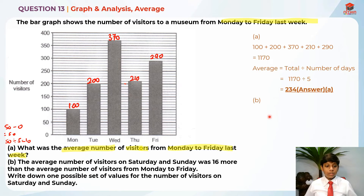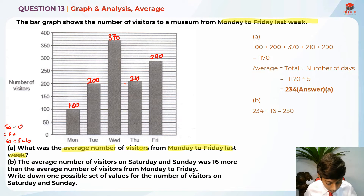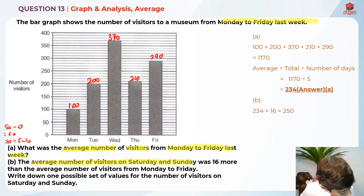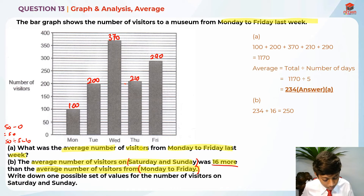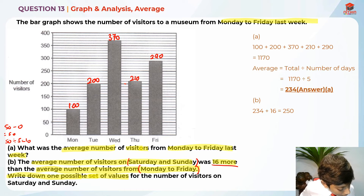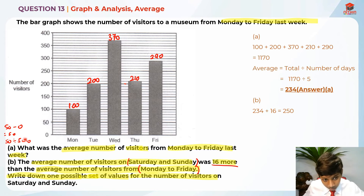Now for Part B. Let's read the question. The average number of visitors on Saturday and Sunday was 16 more than the average number of visitors from Monday to Friday. Monday to Friday is really important, and Saturday to Sunday is really important — 16 more. They're asking us to write down one possible set of values for the number of visitors on Saturday and Sunday. So let's move on to solving Part B.